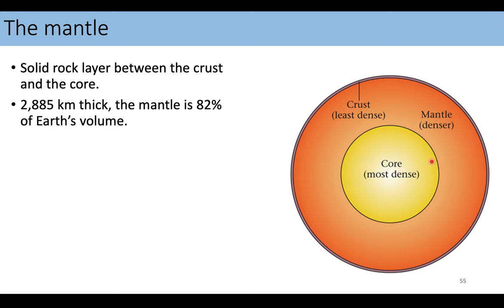So the mantle, in this simplified diagram, is the solid rock layer that makes up the majority of earth's volume, but beneath about 100 kilometers it is hot enough that it can actually flow.